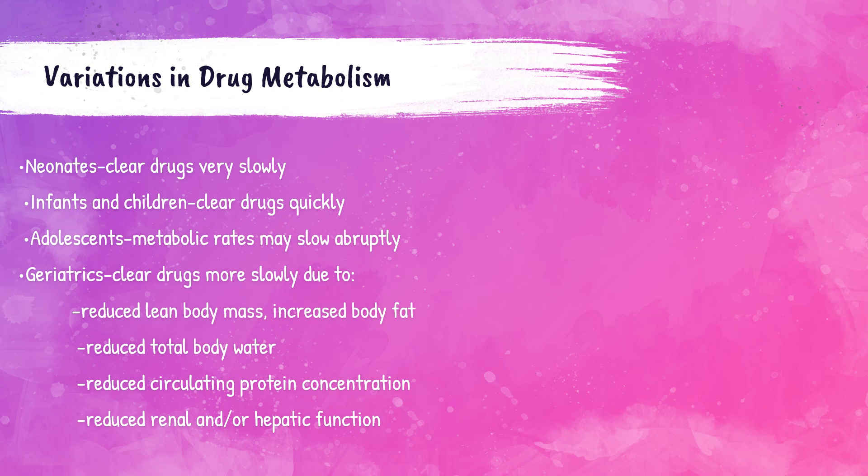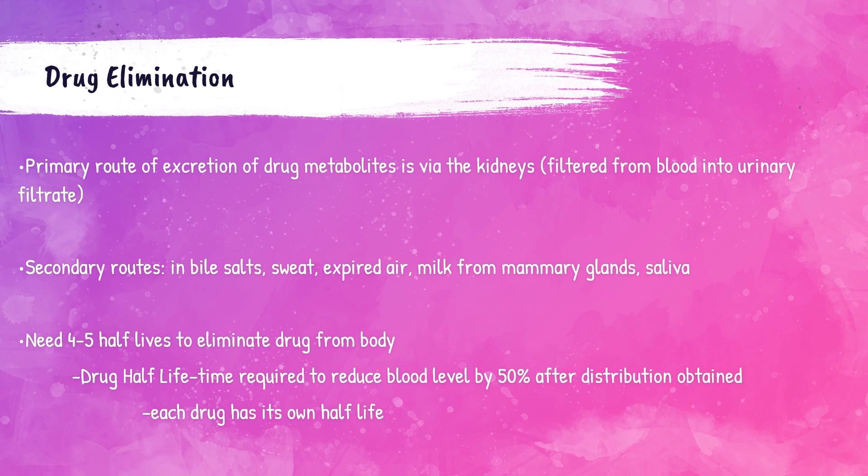Due to age, patients may have variations in the rate of metabolism or breakdown of medications. Newborns clear drugs from their systems very slowly, whereas infants and children clear them quickly. Geriatric patients generally clear drugs slowly due to reduced kidney and liver function, body mass, and protein concentrations.